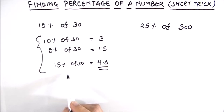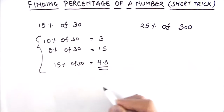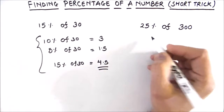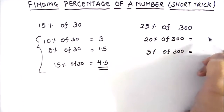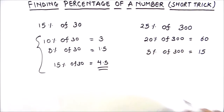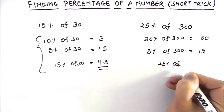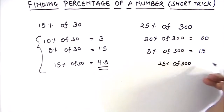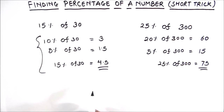Let's calculate 25 percent of 300 using the short trick method. We can calculate orally: 20 percent of 300 will be 60, and 5 percent of 300 will be 15. So 25 percent of 300 will be 60 plus 15, which is equal to 75. This is the short trick you can use to find the percentage of a number.